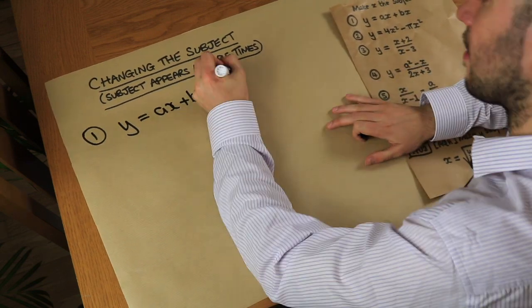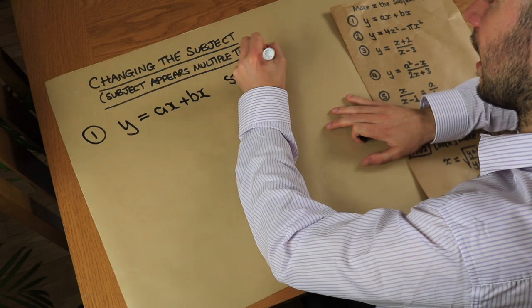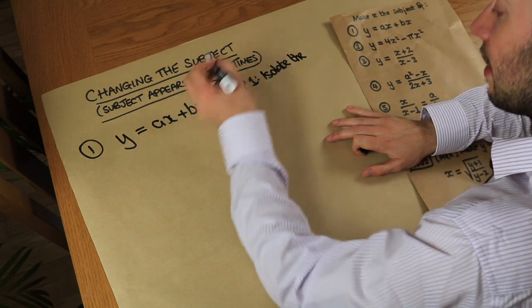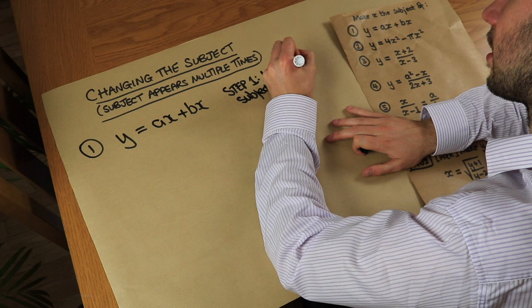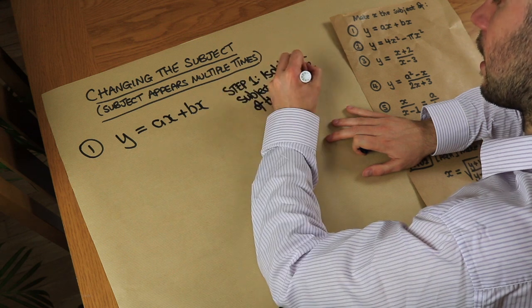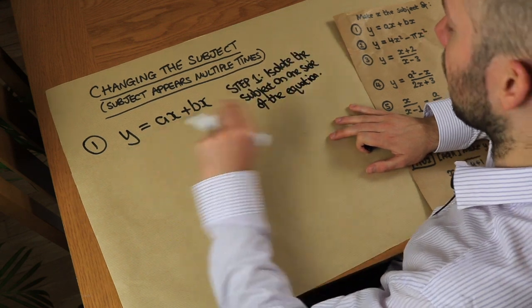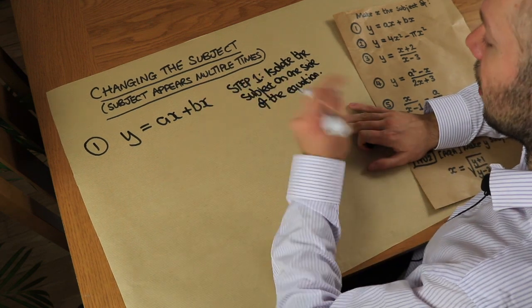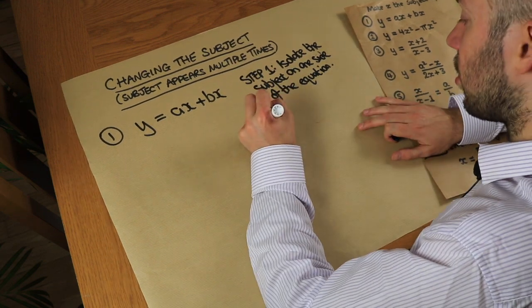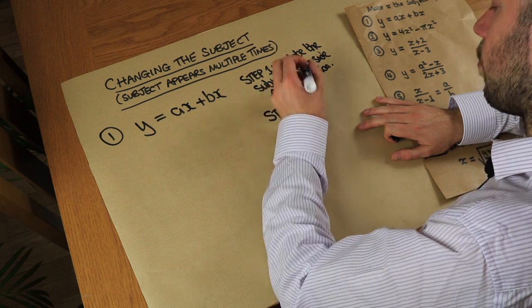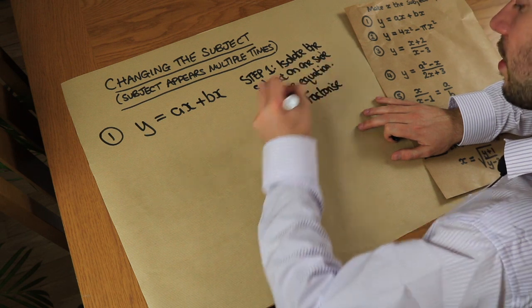The steps are basically this. Step one is to isolate the subject — in this case x — on one side of the equation. In this particular case x is only on one side of the equation, so we have already done step one. Then we do step two, which is to factorize out the subject.